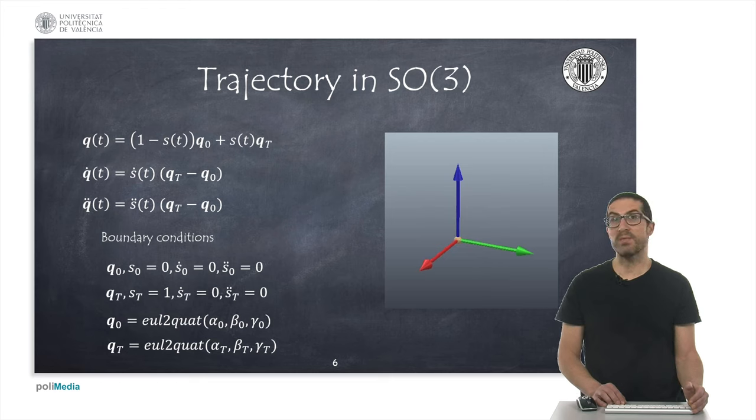This can be obtained, for example, using the MATLAB command euler to quat, provided that we know the Euler angles. In fact, there are six angles that we must know, three corresponding to the initial orientation, and another three corresponding to the final orientation.